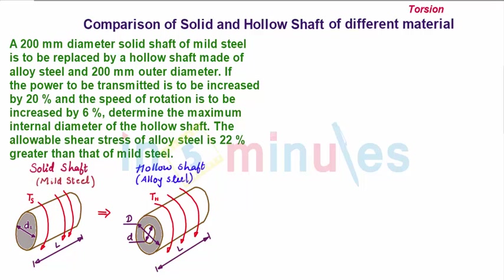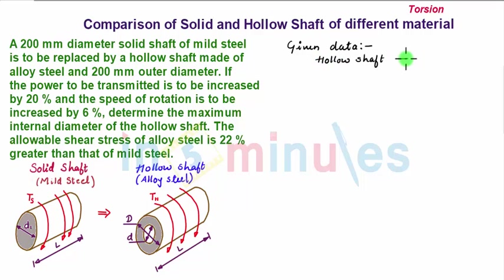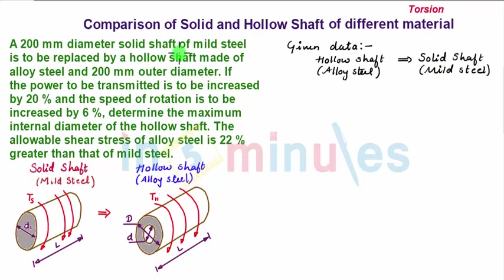We first draw a representative figure of a solid shaft and a hollow shaft. The solid shaft is made of mild steel and it is to be replaced by a hollow shaft made of alloy steel. The respective dimensions are shown. The solid shaft has diameter D1 = 200 mm.